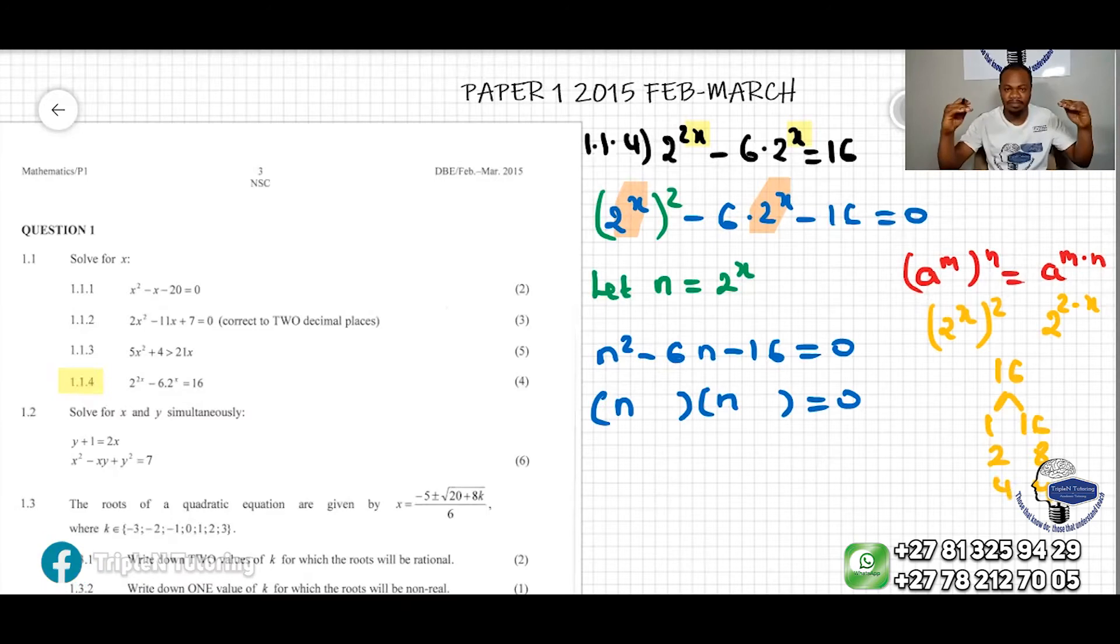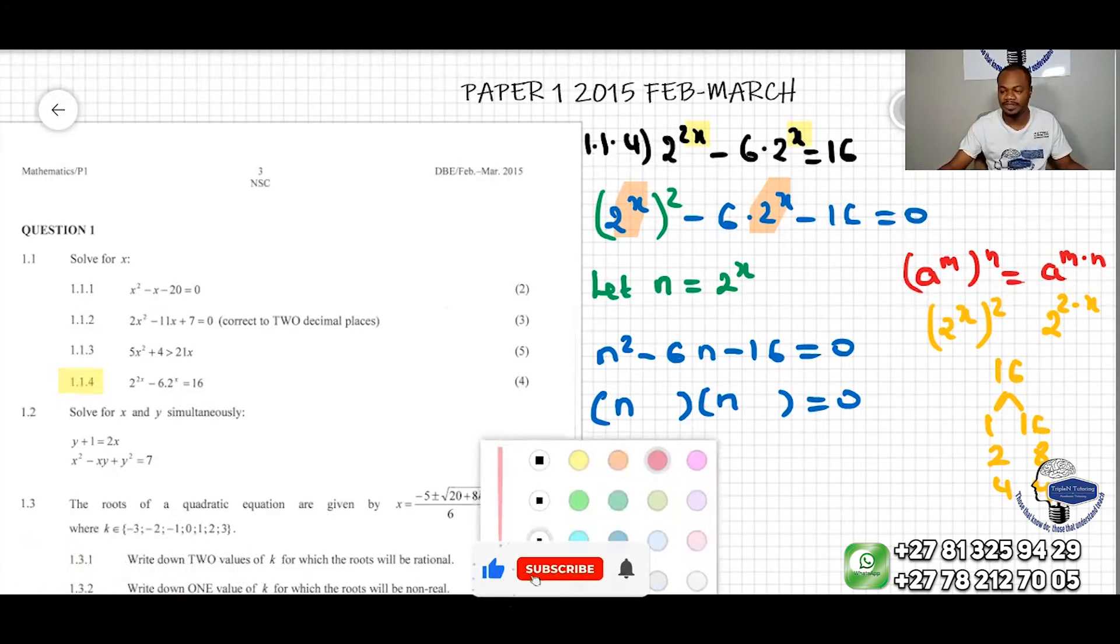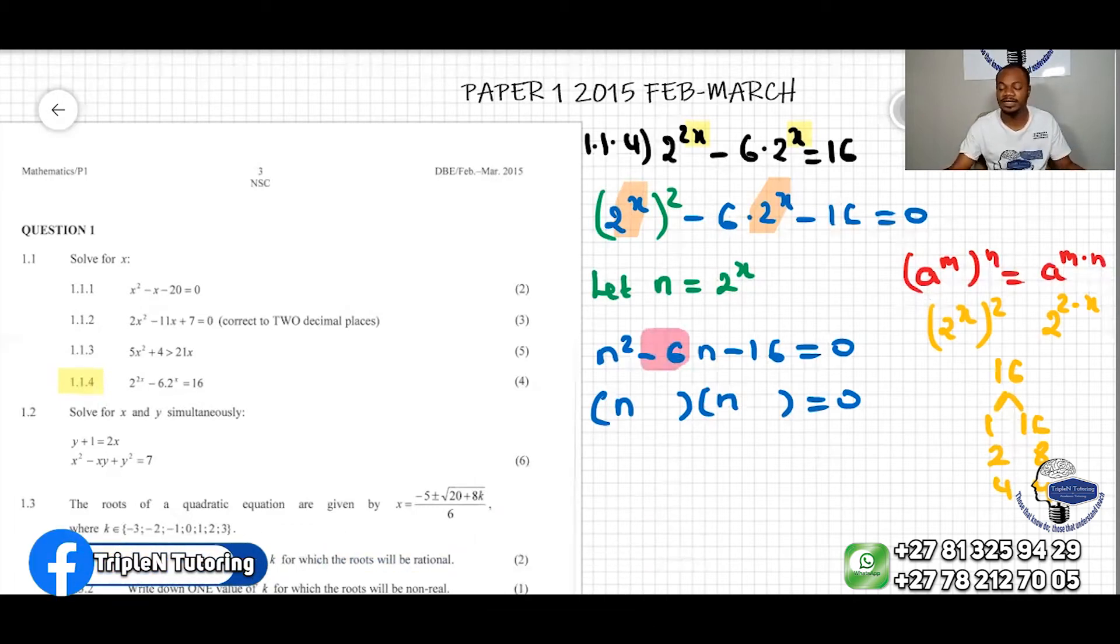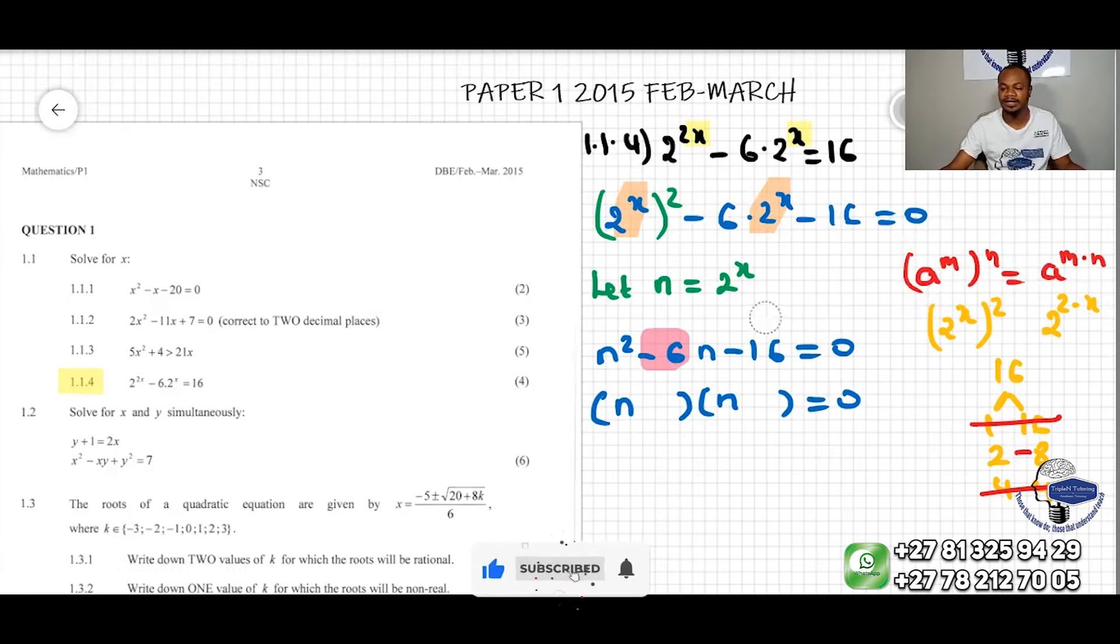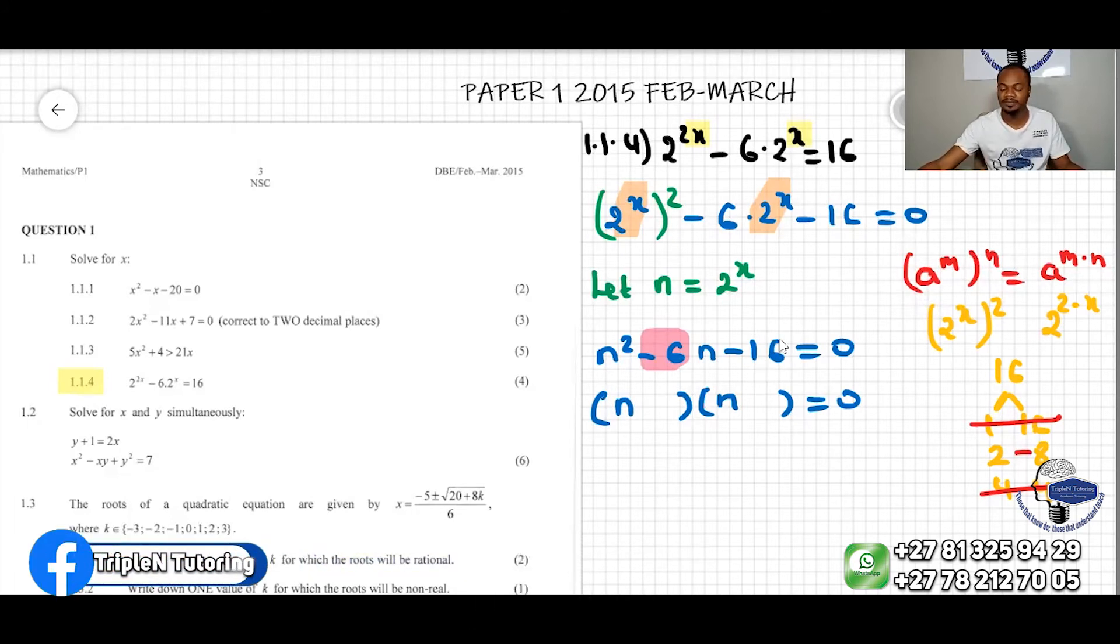Now in the list of the couple of factors of 16, there is one couple that will make a sum equal to the middle term, which is negative 6 here. So we can see that with 1 and 16, we cannot make negative 6. So we cross out, neither with 4 and 4, but with 2 and 8, yes, we can if we do 2 minus 8. And you can notice that 2 times negative 8 makes exactly negative 16. So here I'm going to write plus 2, and then I'll write negative 8.